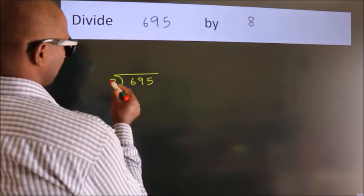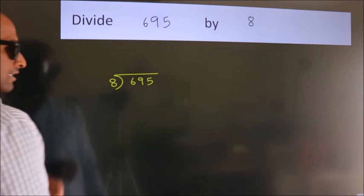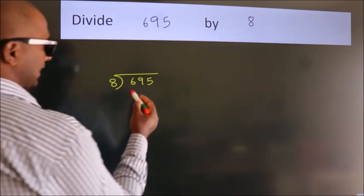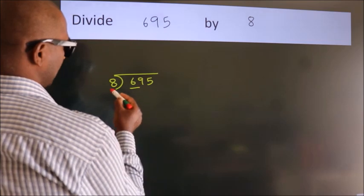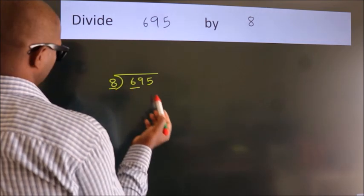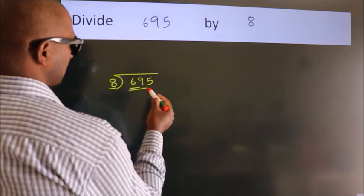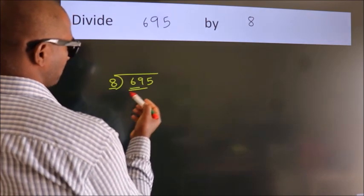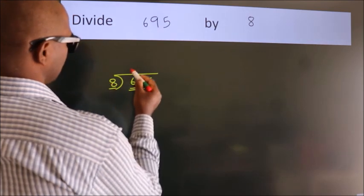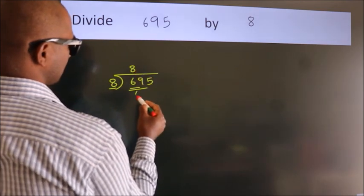8 here. This is your step one. Next, here we have 6. 6 is smaller than 8, so we should take two numbers: 69. A number close to 69 in the 8 table is 8 times 8 equals 64.